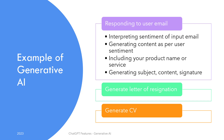ChatGPT would use that information to come up with an email response based on all of these instructions. That would be a full email with all the ingredients including headers, subject, content, signature, etc. — and all the information would be generated based on input from the original user email.